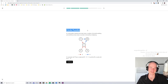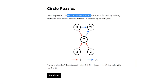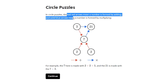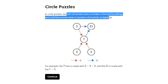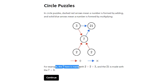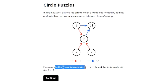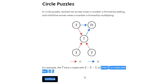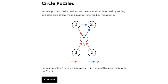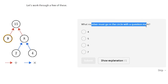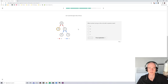Circle puzzle — I could mess with those. Red arrows mean the number is formed by adding, and blue arrows mean the number is formed by multiplying. For example, the seven is made with two plus two plus three, and the twenty-one is made with seven times three. What number must go in the circle with a question mark? Seven.